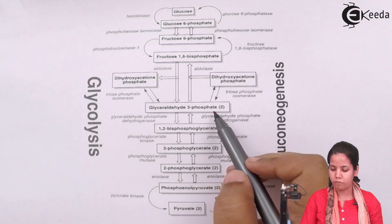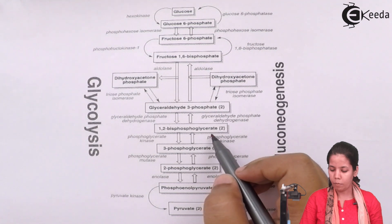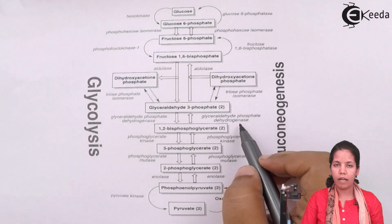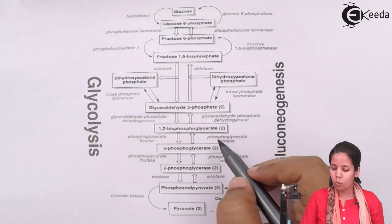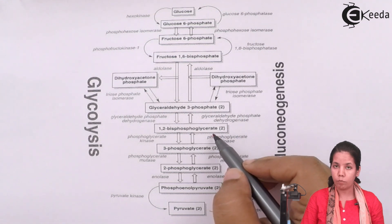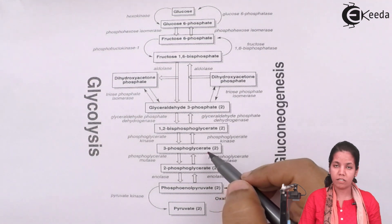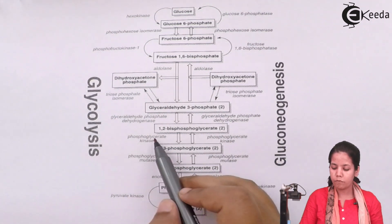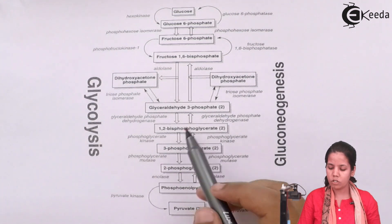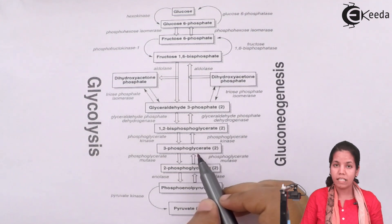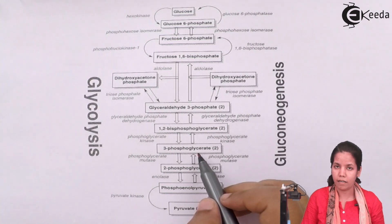Once glyceraldehyde-3-phosphate is formed, the next product is 1,3-bisphosphoglycerate, and the enzyme used is glyceraldehyde phosphate dehydrogenase — dehydrogenases are enzymes that help in removal reactions. Once two molecules of 1,3-bisphosphoglycerate are formed, the next product is 3-phosphoglycerate. The formation of 3-phosphoglycerate involves ATP, so the enzyme that comes into play is phosphoglycerate kinase. Note the change from 1,3-bisphosphoglycerate to 3-phosphoglycerate, indicating ATP is involved in this step.